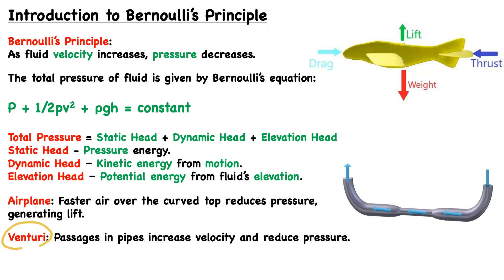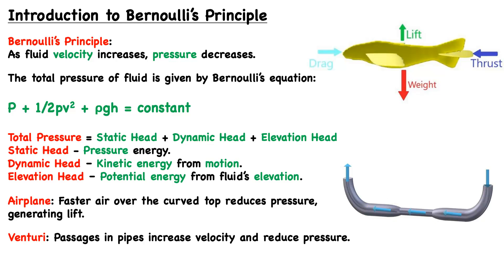The Venturi effect occurs when a fluid flows through a constricted area — you see an increase in velocity and a decrease in pressure, which is Bernoulli's principle in action. In a pipe that constricts to a smaller cross-sectional area and then returns to its original size, the velocity increases and pressure decreases through the constricted region, then returns to original values afterward.